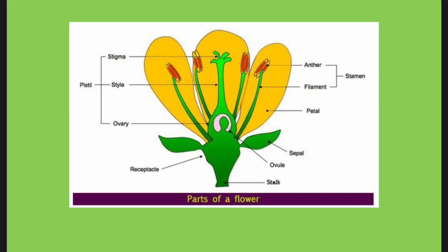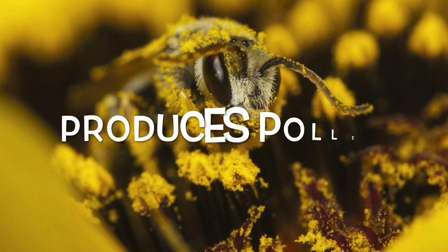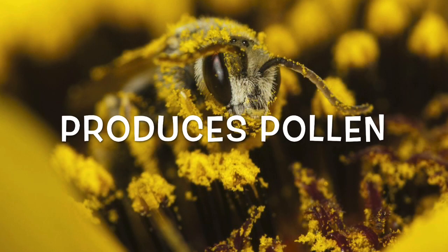The anther sticks out just like the stigma does — you can see a real anther on this flower here. The anther sticks out because its job is to produce pollen. It wants this pollen to either be blown by the wind or collected by pollinators so it can get to other flowers.